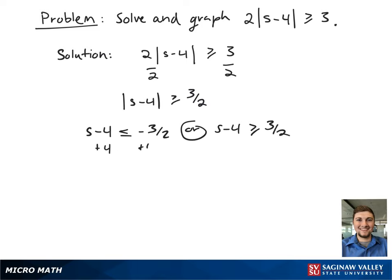Starting on the left-hand side of the new inequality, we're going to add 4 to both sides. This gives s is less than or equal to 5 halves.